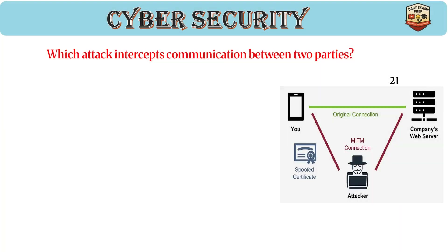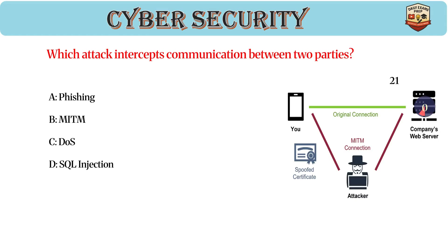Which attack intercepts communication between two parties? Answer: B, MITM. A man-in-the-middle attack intercepts data between two entities, can modify or steal sensitive information, and is prevented by encryption and certificates.